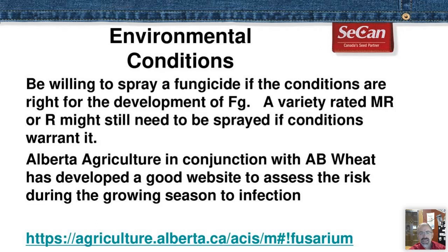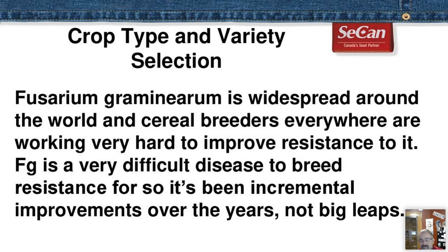A variety rated MR or R still might need to be sprayed — they're not 100% tolerant. The ratings are just an indication of a variety's tolerance to Fusarium; they'll all get it to a certain extent. Fusarium graminearum is widespread around the world. I was lucky enough to be in China in 2016 — it's on the top of their breeding list over there. We're not alone in trying to breed resistance to Fusarium.